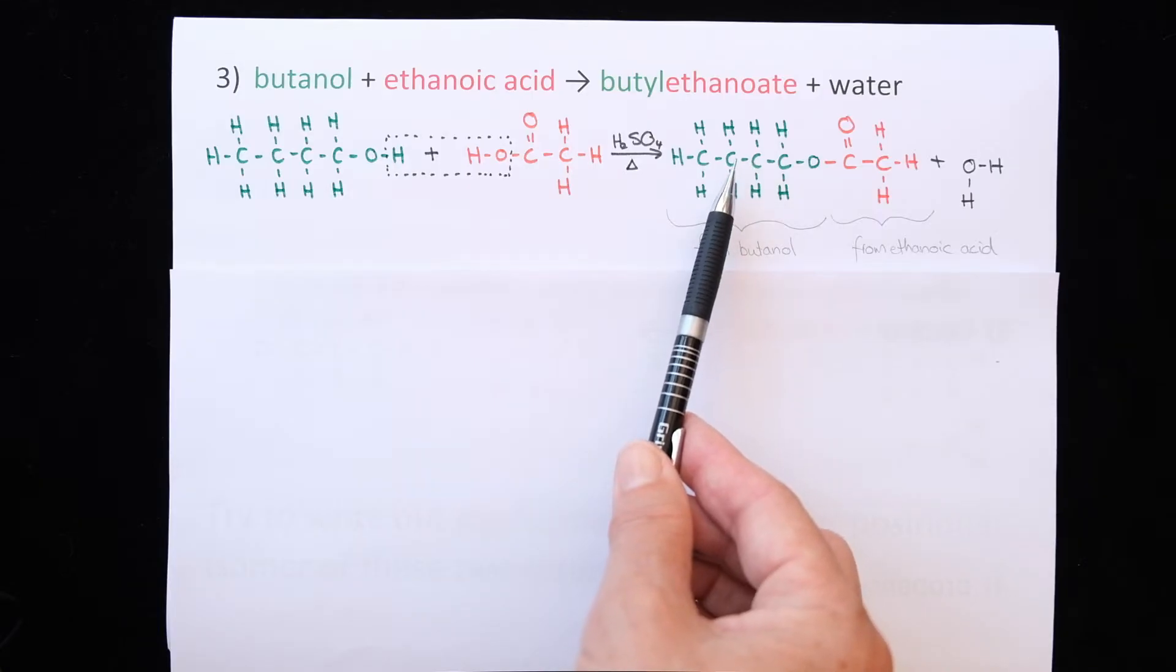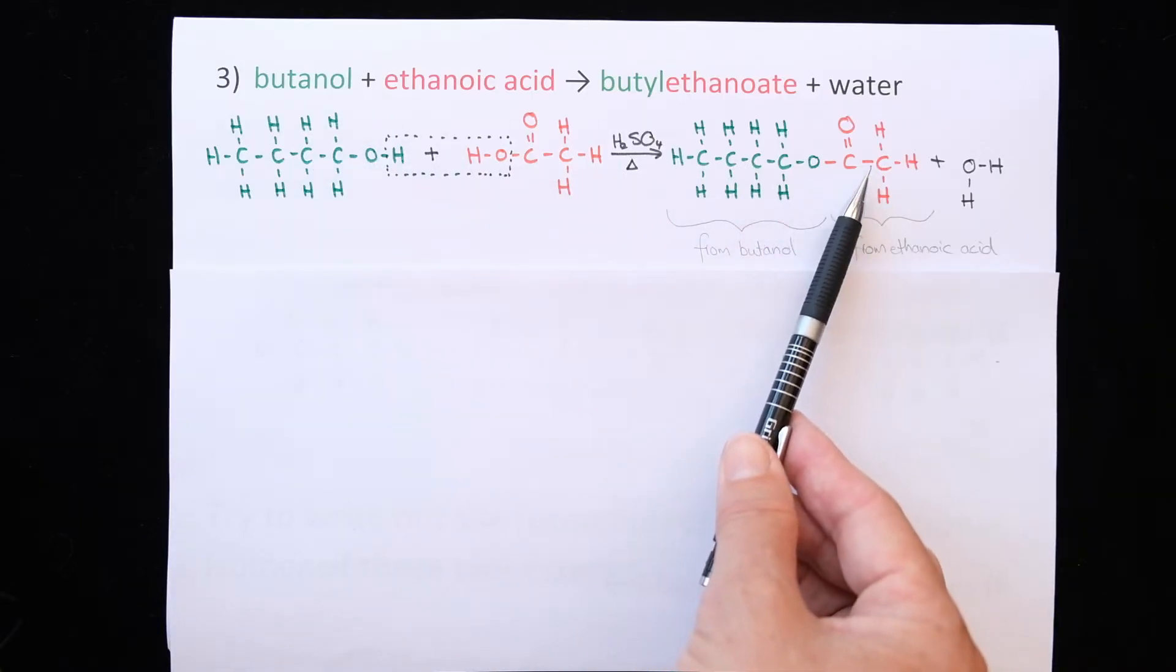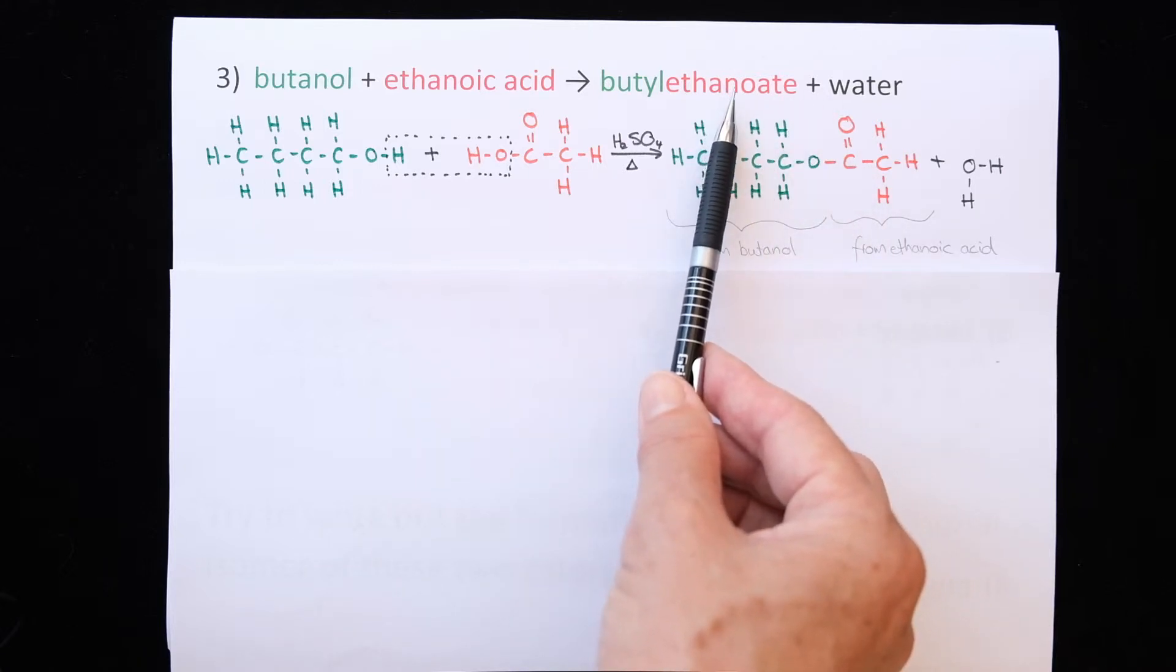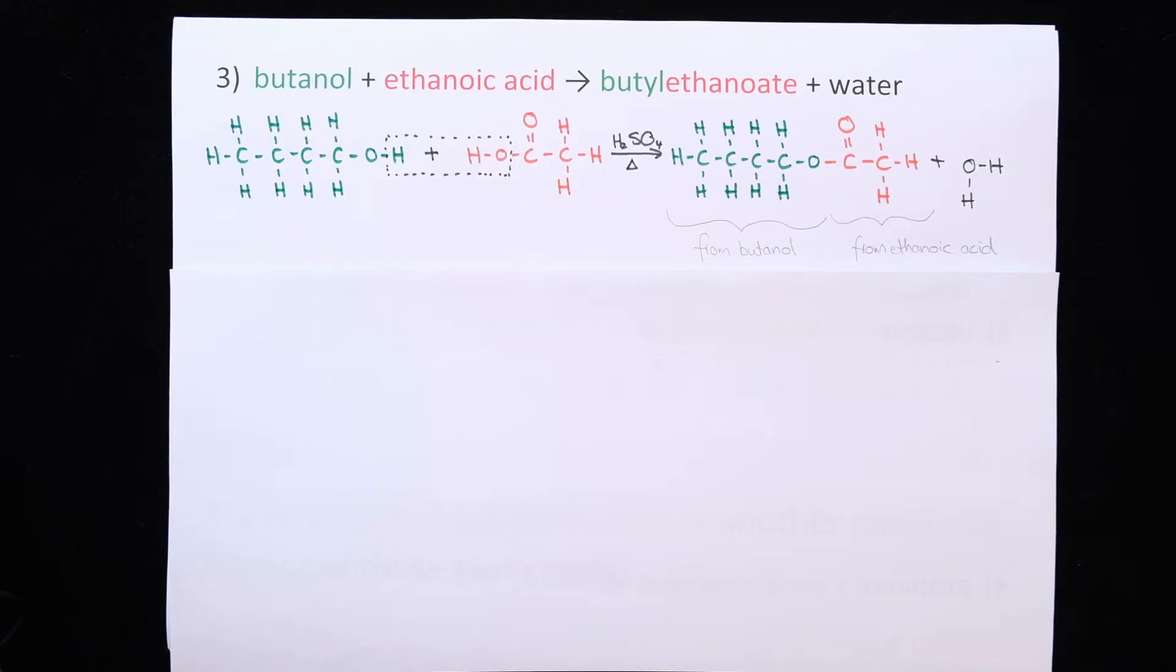So there's your ester. The first part of the name comes from the alcohol which was butanol. The second part of the name comes from the carboxylic acid which was ethanoic acid. So therefore the name is butylethanoate.